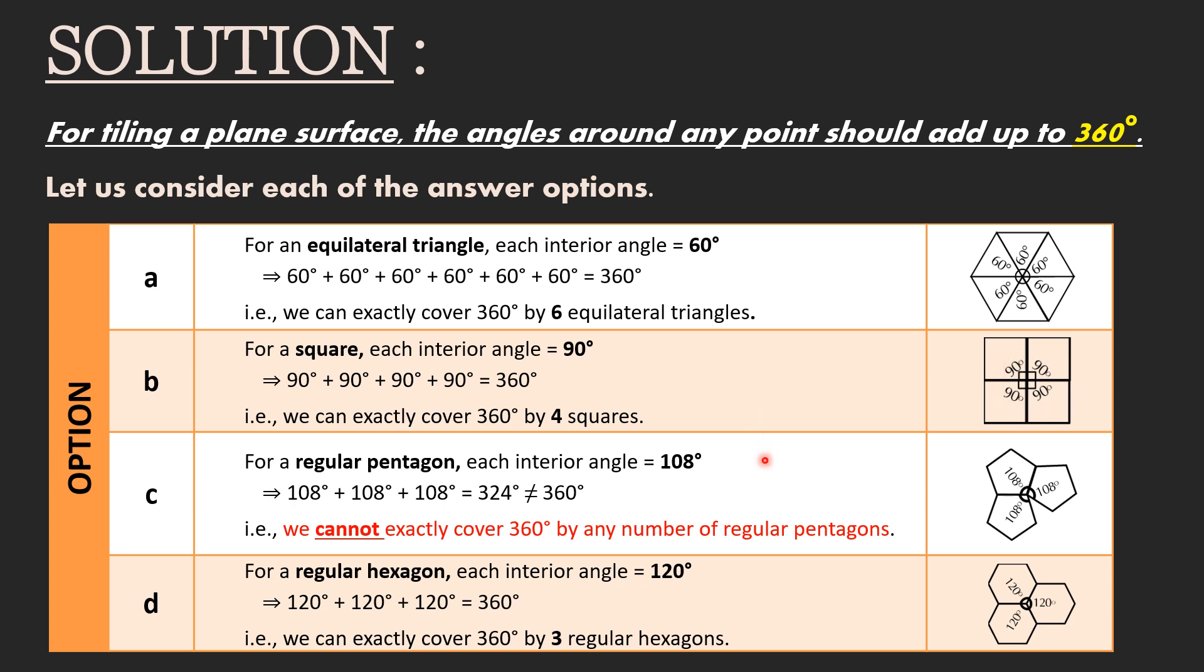Next, let us consider option C. For a regular pentagon, each interior angle equals 108 degrees. 3 times 108 degrees is not equal to 360 degrees. That is, we cannot exactly cover 360 degrees by any number of regular pentagons.